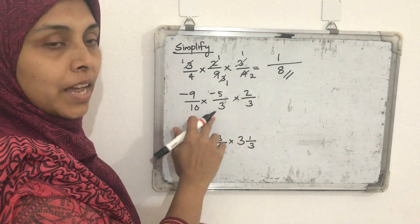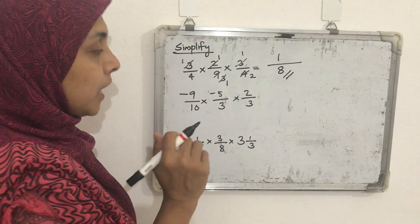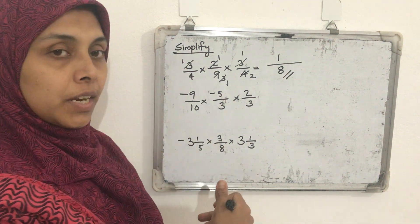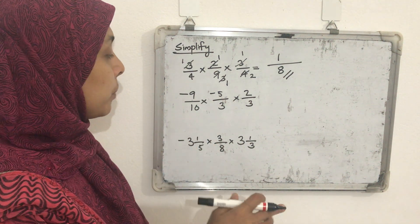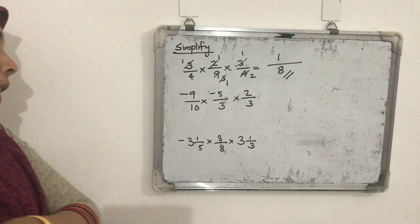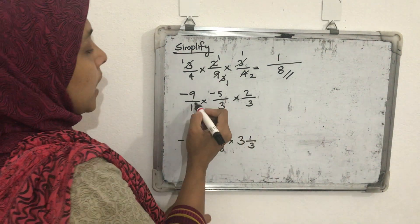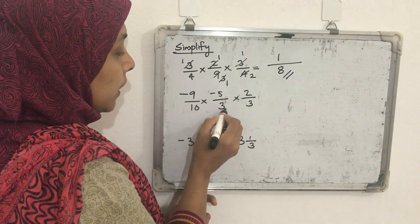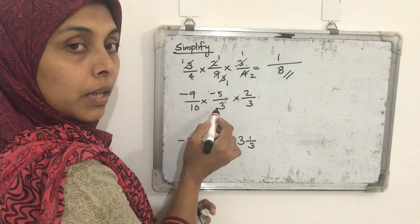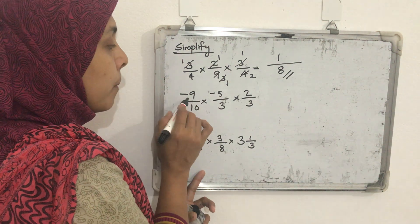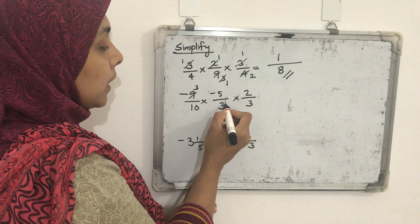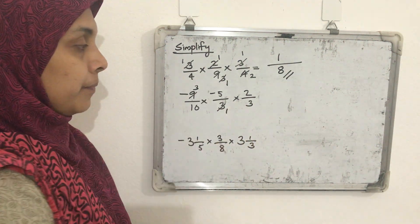Next problem has two negative rational numbers and one positive. We check common factors in any numerator or denominator. First, 9 and 10 have no common factors. So we take the other denominator: 9 and 3 share the common factor 3. So 9 divided by 3 gives 3, and 3 divided by 3 gives 1.